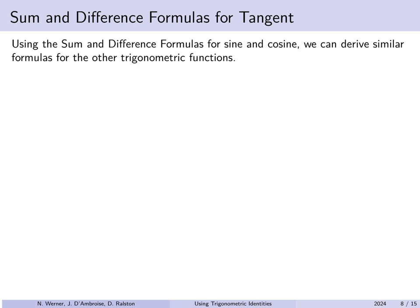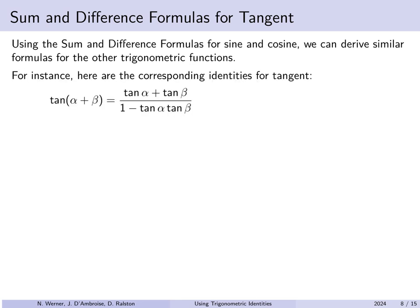Using the sum and difference formulas for sine and cosine, we can derive formulas for tangent. The tangent of alpha plus beta is tangent alpha plus tangent beta over 1 minus tangent alpha tangent beta. The tangent of the difference has the same structure but with pluses and minuses swapped.